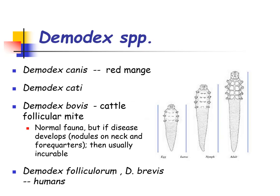There are different species of demodex according to its host. For dogs, we have Demodex canis, which is the causative agent of red mange. We also have Demodex cati for cats, Demodex bovis for cattle, and Demodex folliculorum and Demodex brevis for humans. Demodex are considered to be normal fauna, but if disease develops, it is considered to be incurable.